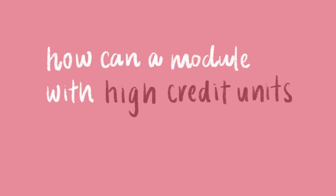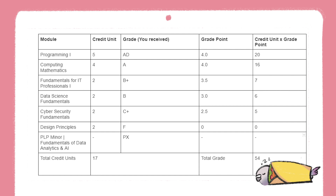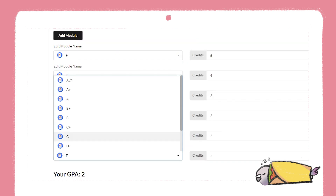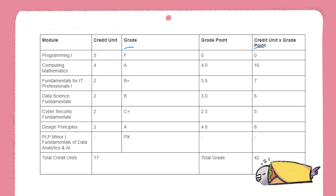While we are at this topic, I want to talk about how a module with high credit units can affect the total grade. So let's just say we switch the grade of Programming 1, which is A, and the grade of Designing Principles, which is F. As you can see, the difference would be around 0.7, which is a super large gap. So the effect of a high credit unit module would be pretty prominent in the total grade.